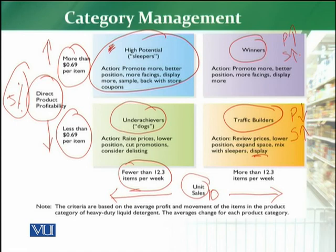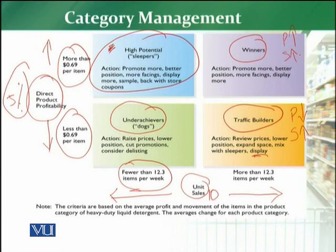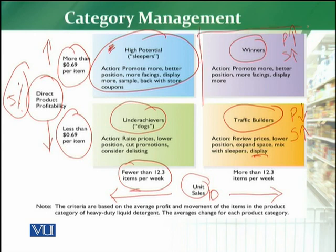For winner categories, the retailer tries to promote them more, improves their positioning, increases their facings, gives more display and secondary display, and tries to increase their overall display so that more profitability and more sales are generated for the business. In a retailer's store, having all four categories is normally a must — some will be traffic builders, some high potential or sleeper categories where profitability exists but sales don't, some will be winners, and some will be dog categories. With the passage of time, many categories fall into the dog category, so the retailer delists them and aims to improve, increase, grow, and promote winner categories to generate more profitability and more sales.